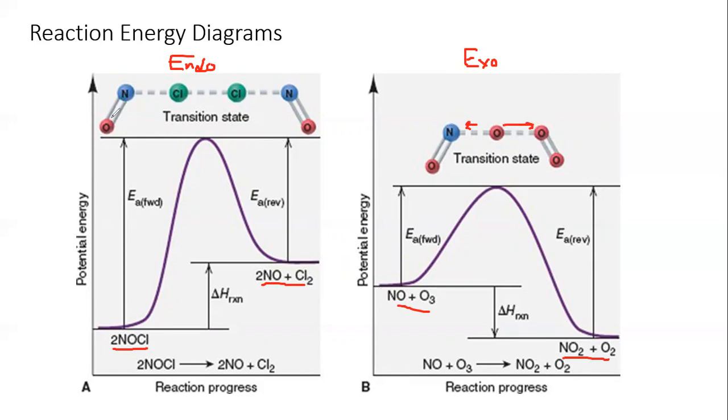So again, it's very important that you understand the difference between an endothermic reaction diagram and an exothermic reaction diagram. Endo products are higher than reactants. Exo products are lower than reactants.